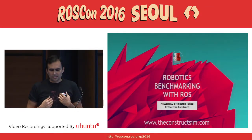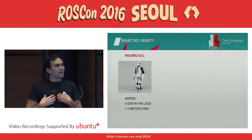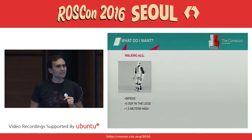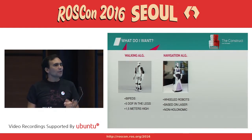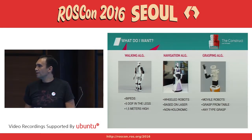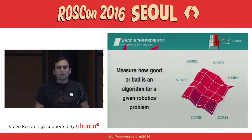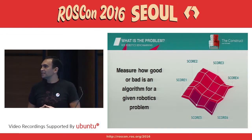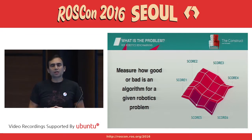What do I want? I want to be able to compare my walking algorithm for a humanoid robot against your algorithm. I want to compare my navigation algorithm of a wheeled robot against your algorithm. I want to compare my grasping algorithm against your algorithm. Basically, I'm talking about measuring how good or bad a solution or algorithm is for a given robotics problem.